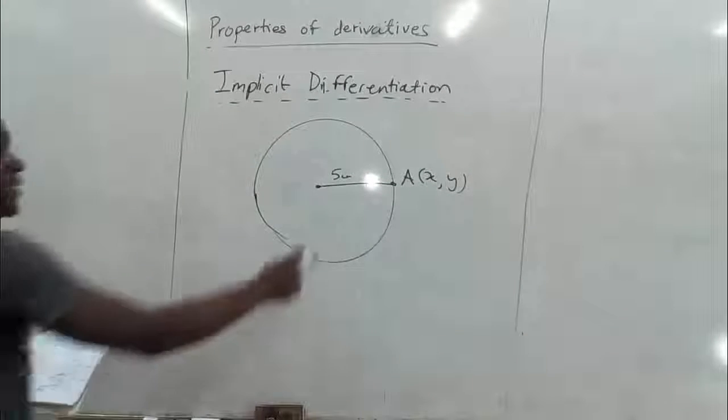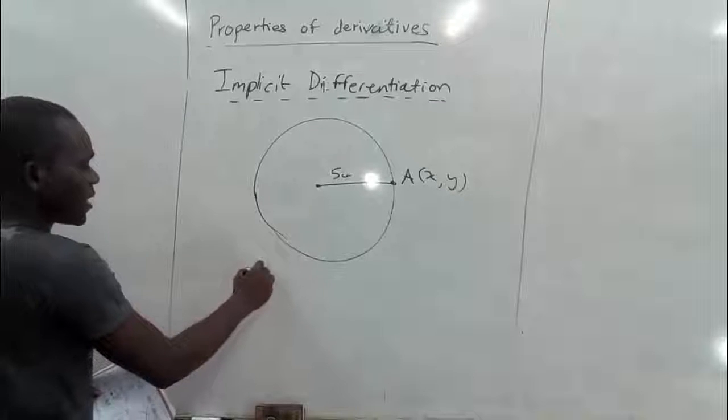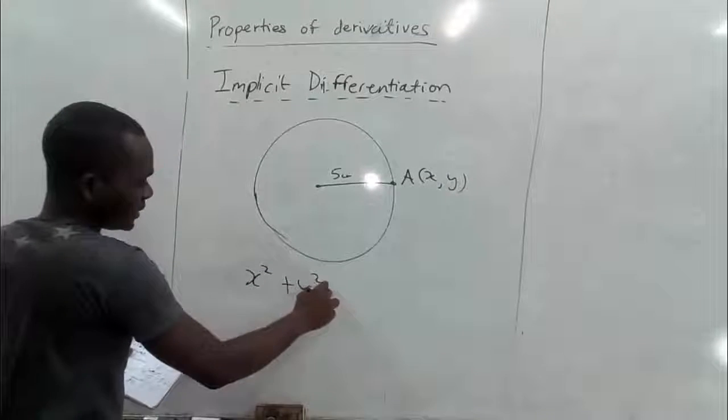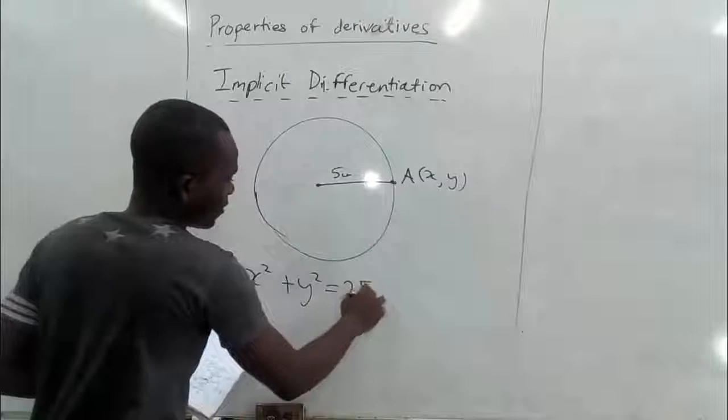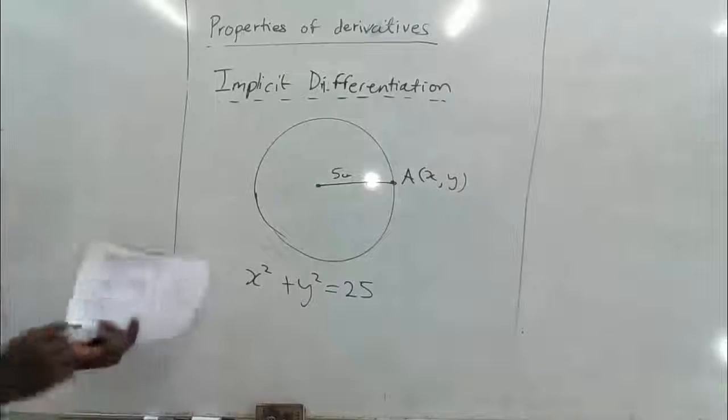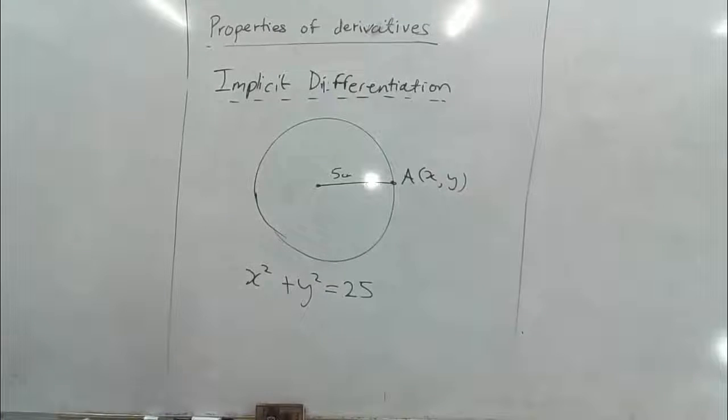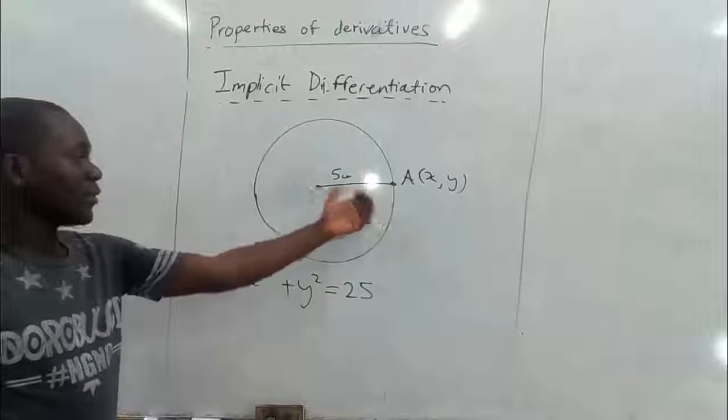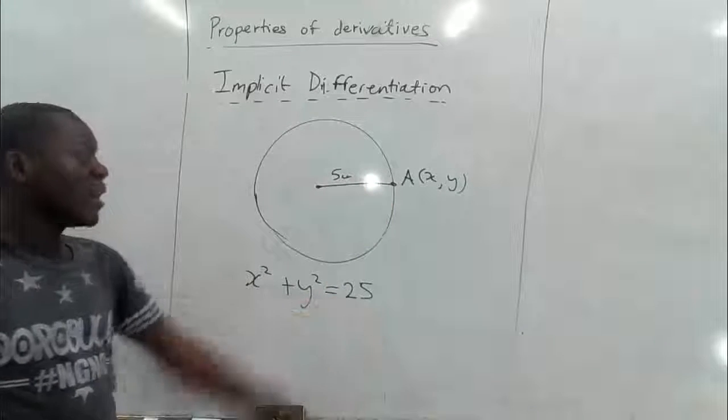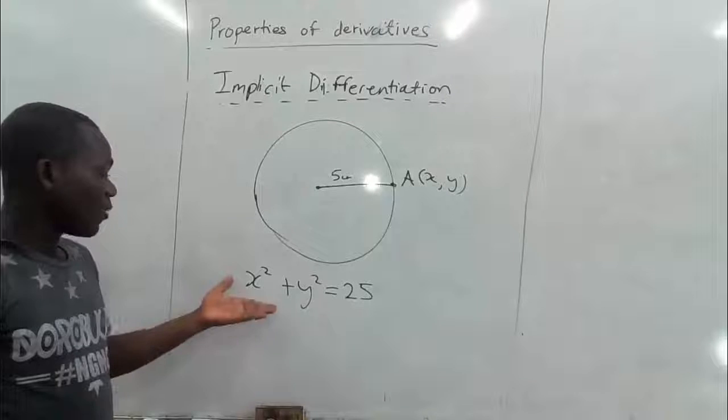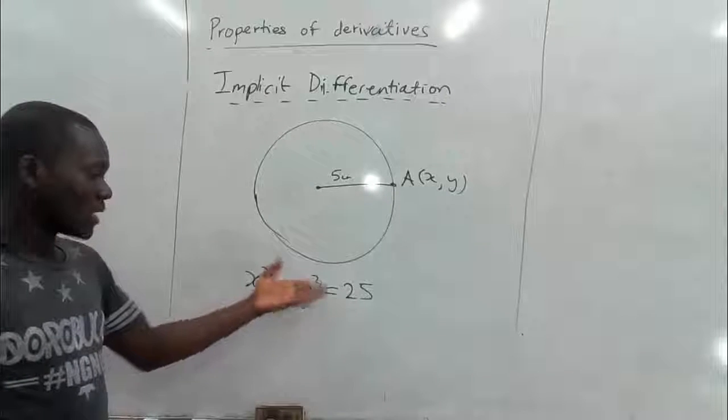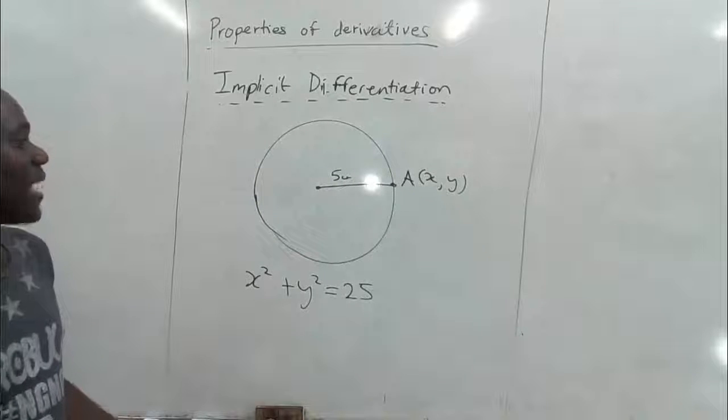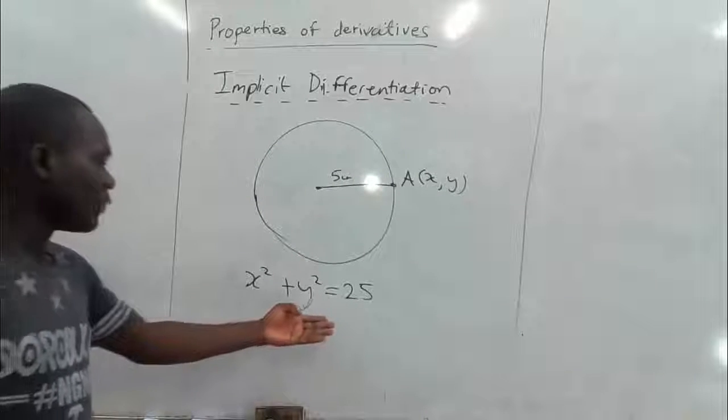So the equation of this circle will be x squared plus y squared equals 25 from our algebraic expressions and the equation of a circle. A circle with a radius of 5 centimeters gives us a formula or an equation of x squared plus y squared equals 25. And we are actually finding the derivative of this equation.